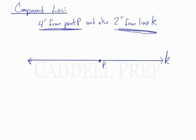So, 4 inches from point P would just be a circle centered at P with a radius of 4. So, we just have that, this radius here is 4 inches.